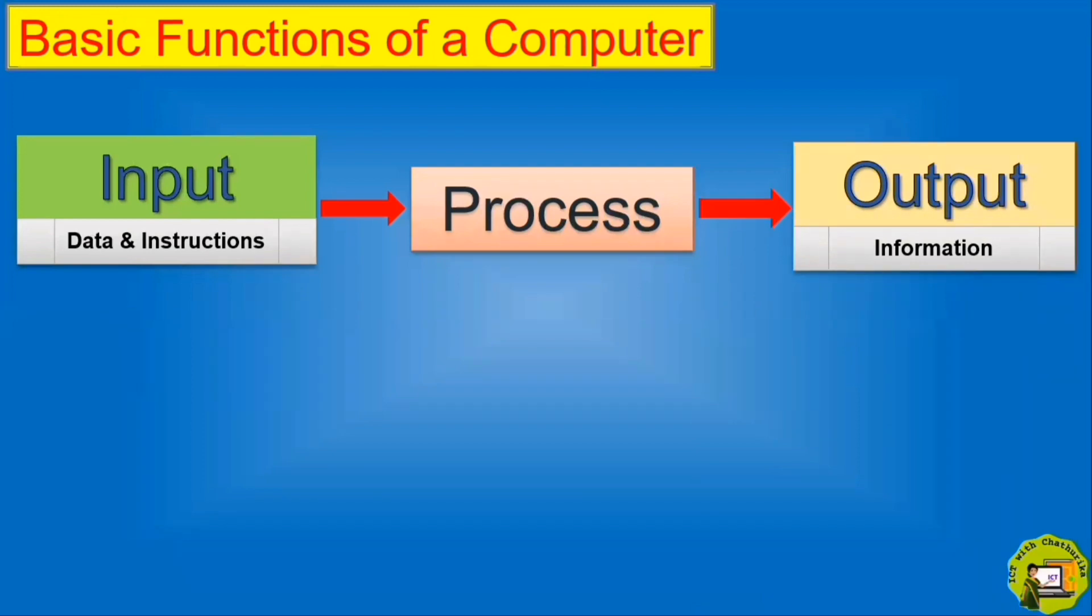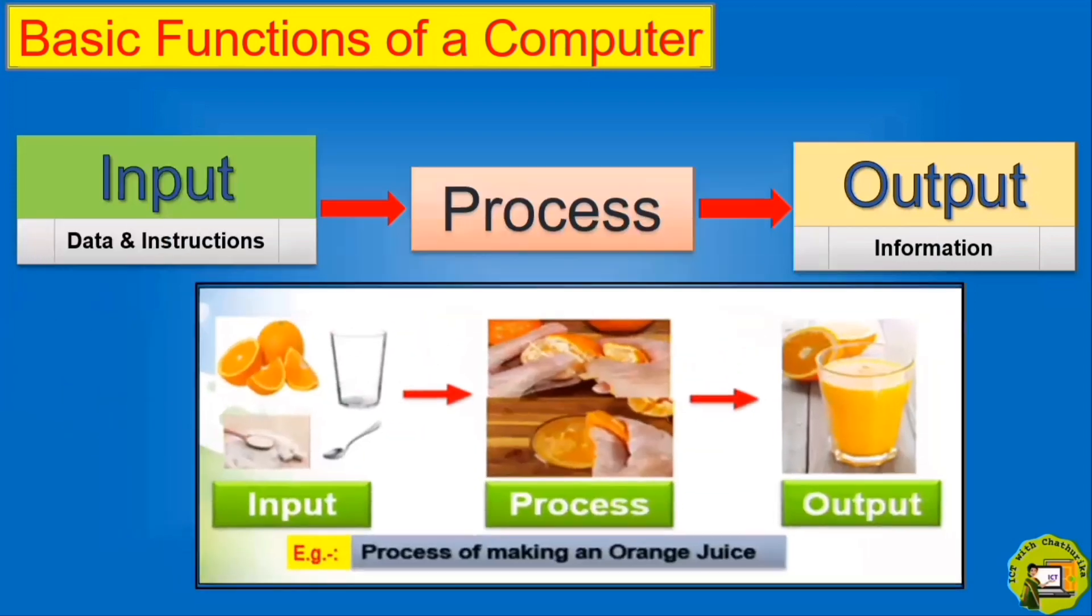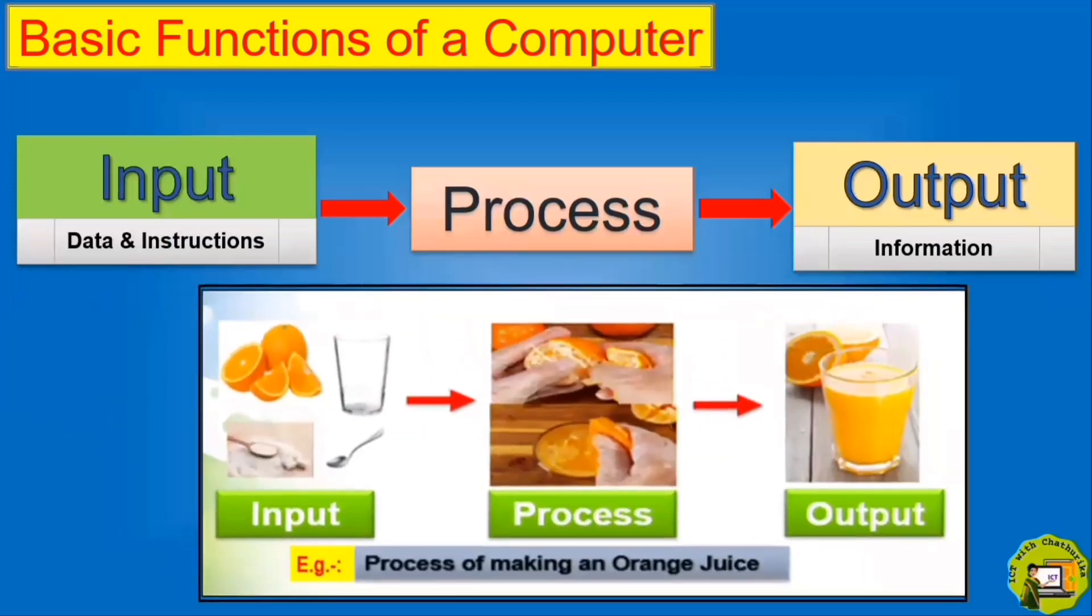Next, see this example of the process of making an orange juice. What are the things that we need to make an orange juice? We need orange, glass, sugar, spoon, water. These are input. Then the process. Process is the way of making an orange juice.